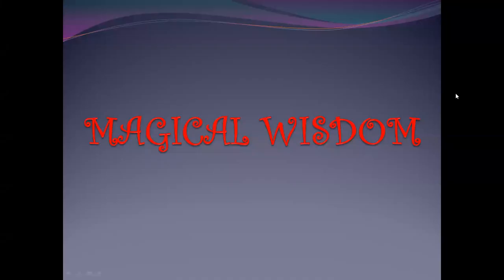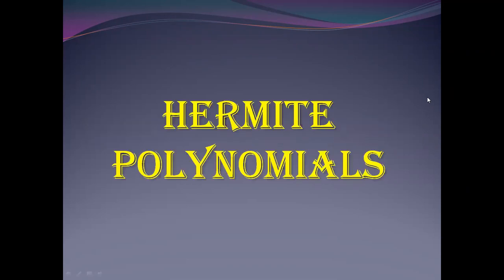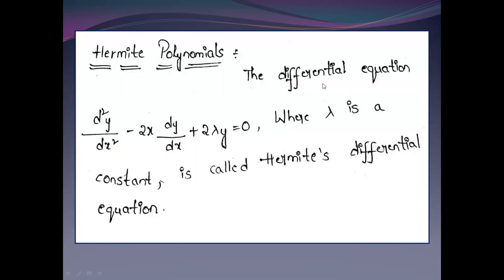Welcome to our channel Magical Wisdom. This is Hermite Polynomials. The Hermite Differential Equation is: d²y/dx² minus 2x dy/dx plus 2λy equals 0. This is the Hermite Differential Equation, where λ is a constant.